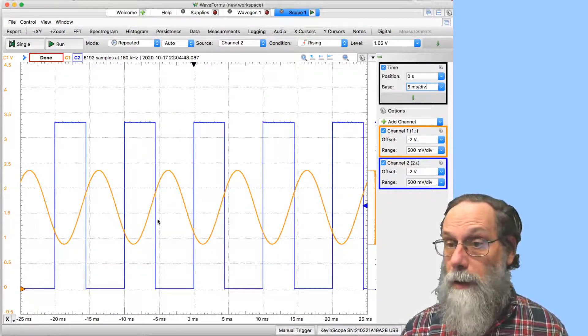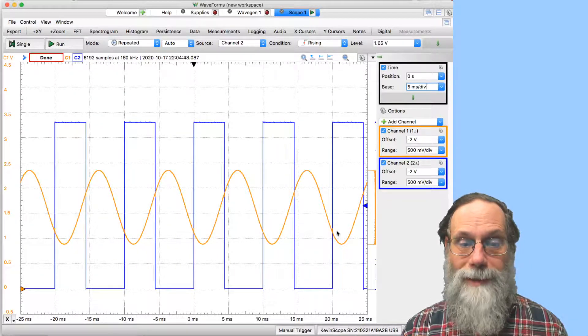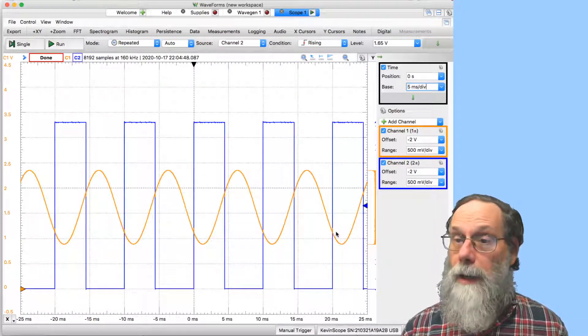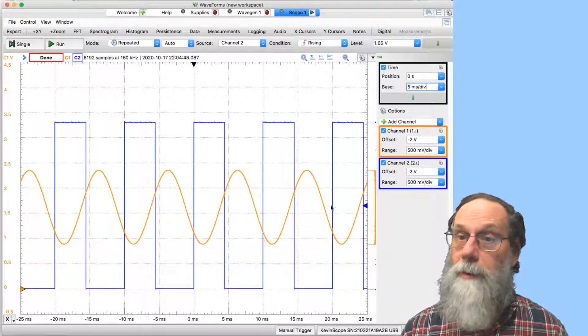Clearly the Schmitt trigger here is working. We can see that it's triggering always at the same two places on the waveform, and that's exactly what we would expect when we have a clean sine wave and run it through a Schmitt trigger. So everything here seems to be working.